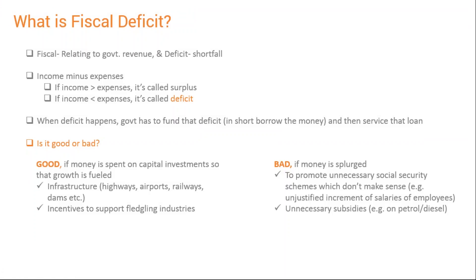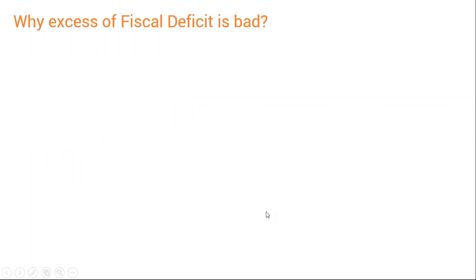Unnecessary subsidies are another example of bad spending. A few years back, the government was giving subsidies on petrol and diesel, which were nowhere contributing to the GDP of the nation — it was just distributing freebies to citizens. Now the government has stopped giving those subsidies, and you would have noticed that the fiscal deficit has reduced, which we will discuss in our further slides.